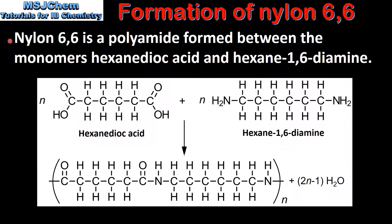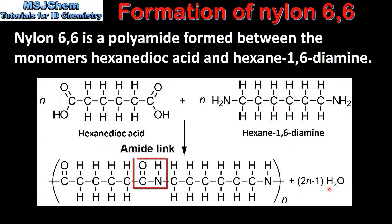Next we look at the formation of Nylon-6-6. Nylon-6-6 is a polyamide formed between the monomers hexanedioic acid and hexane 1,6-diamine. Polyamides are condensation polymers formed between dicarboxylic acids and diamines. In the reaction an OH group on the dicarboxylic acid reacts with a hydrogen atom in the amine group on the diamine, producing a molecule of water and a covalent bond between the carbon and nitrogen atoms.